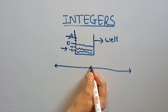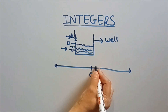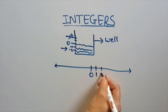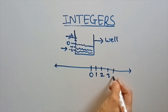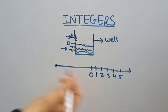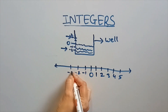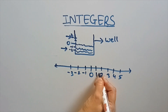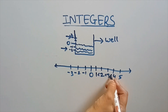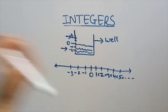This is the initial point 0. All the numbers on the right-hand side are positive numbers — numbers are increasing. On the left-hand side, numbers are decreasing. See: 1 is less than 2, 2 is less than 3, 3 is less than 4, 4 is less than 5, and so on.